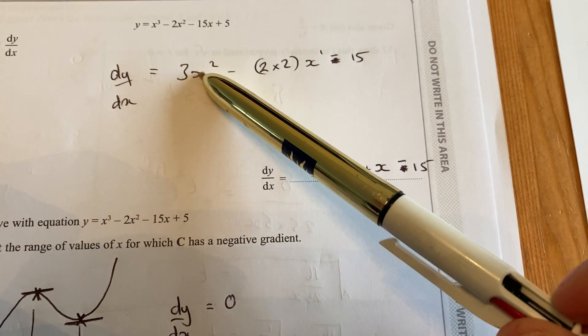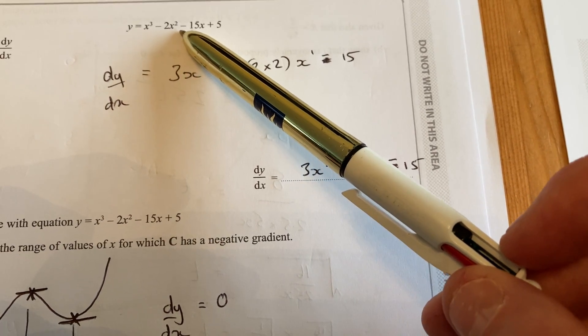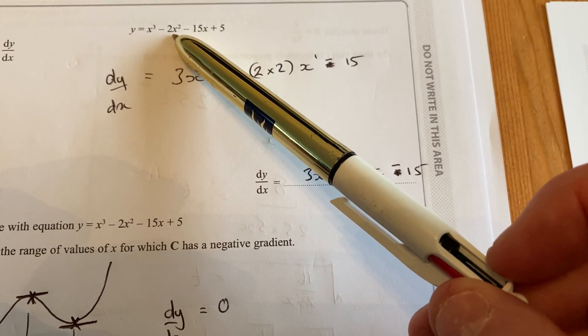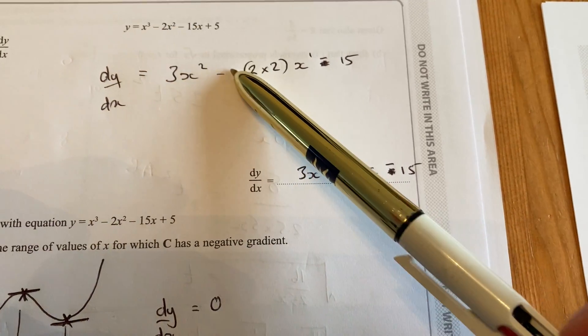So x cubed becomes 3x squared minus 2x squared. The 2 comes down and joins the 2 at the front, times in to make 4x to the power 1.